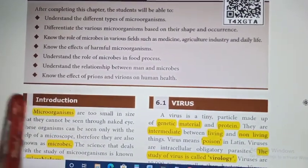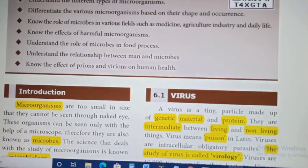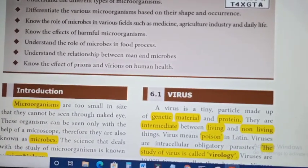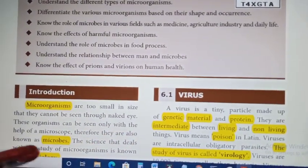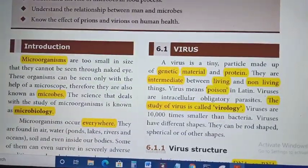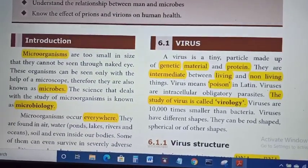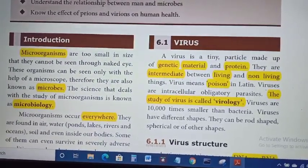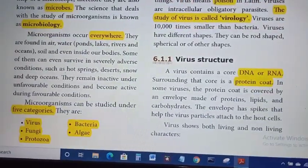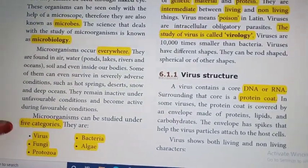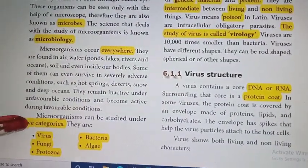Microorganisms are too small in size. They cannot be seen through the naked eye. These organisms can be seen only with the help of the microscope. They are also known as microbes. The study of microorganisms is known as microbiology. Microorganisms occur everywhere. Nearly 5 organisms come under microorganisms.